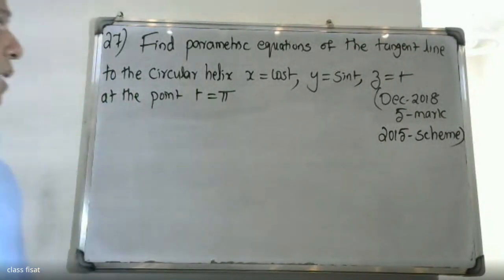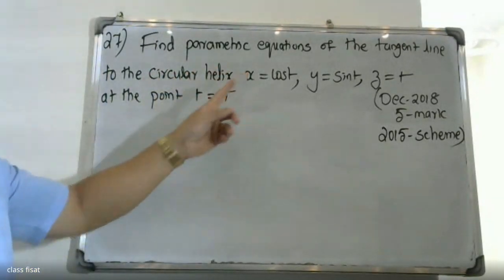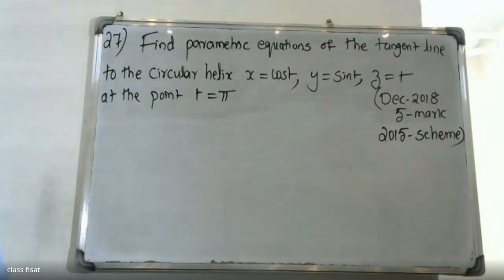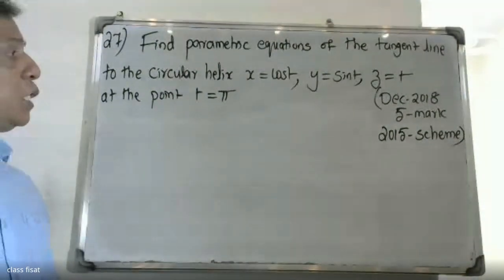Good morning students, I will take the rest of the question. Find the parametric equation of the tangent line to the circular helix, x equals cos t, y equals sin t, z equals t at the point t is equal to π.